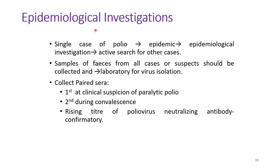If there is a polio outbreak, even a single case of polio constitutes an outbreak or epidemic. We must begin epidemiological investigations and go for active search of all cases. Samples of feces from all cases and suspects should be collected and sent to the laboratory for virus isolation within 72 hours, maintaining the reverse cold chain. Paired sera should be collected — the first at clinical description of paralytic polio and the second during convalescence. A rising titer of polio virus neutralizing antibody is confirmatory.